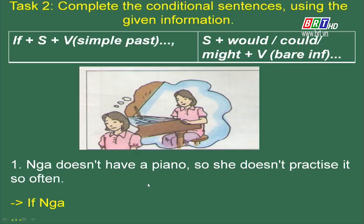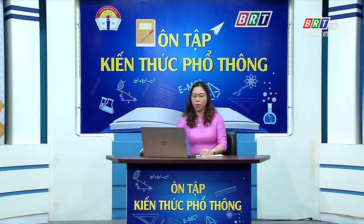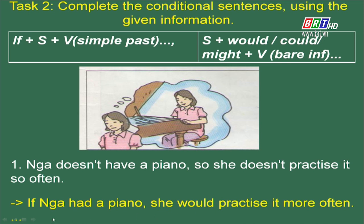Bây giờ cô có bài tập thực hành câu điều kiện loại 2. Cô sẽ cho các em tình huống và các em hãy hoàn tất câu điều kiện. Sentence 1: Nga doesn't have a piano, so she doesn't practice it so often — Nga không có một cây đàn piano, vì vậy cô ấy không thực hành nó thường xuyên. Đây là tình huống thật. Câu điều kiện: If Nga had a piano, she would practice it more often — nếu Nga có một cây đàn piano, cô ấy sẽ thực hành nó thường xuyên hơn. Khi chuyển sang câu điều kiện loại 2: doesn't have → had; doesn't practice → would practice.